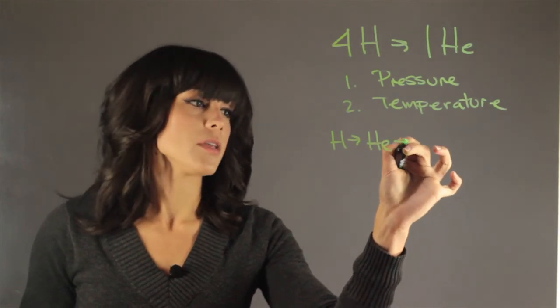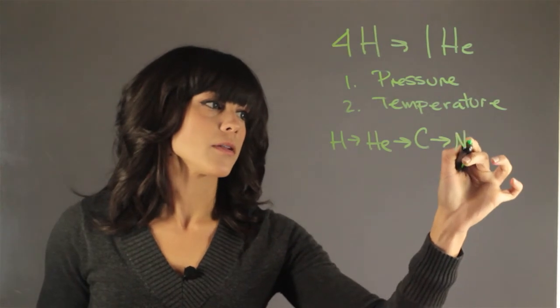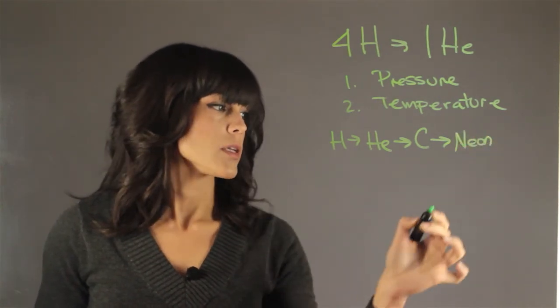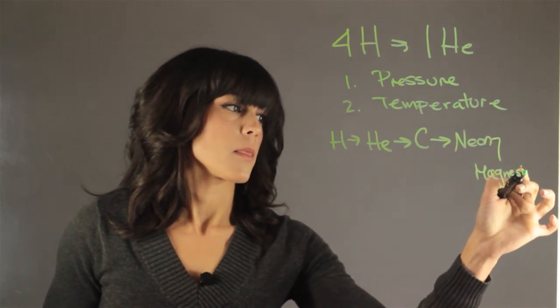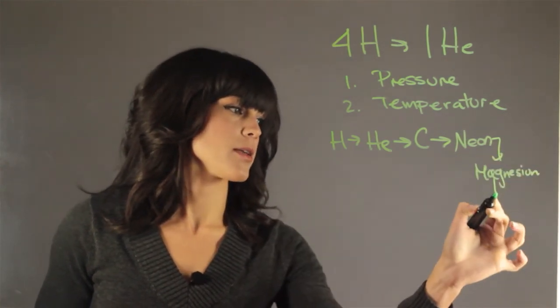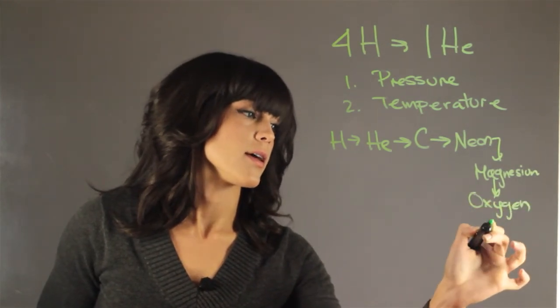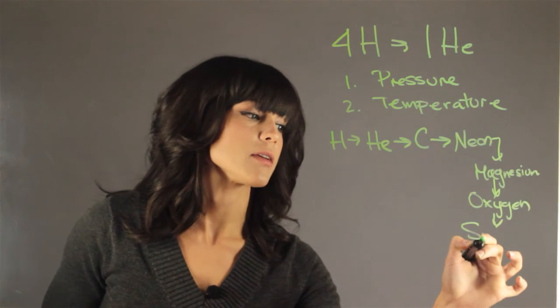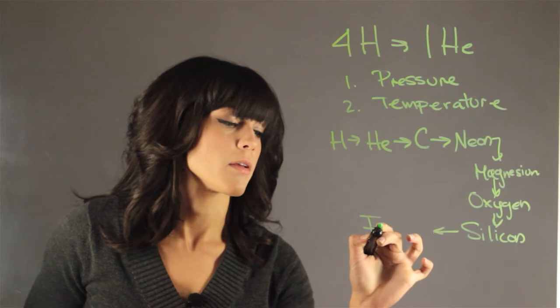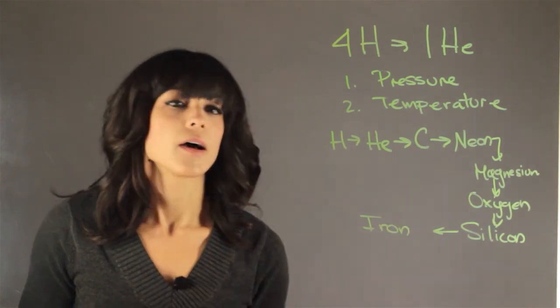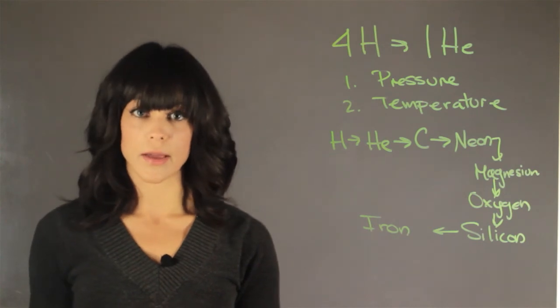We can turn helium into carbon. After that, we have neon. After neon, we have magnesium. Then after magnesium, we have oxygen. After oxygen, we have silicon. After silicon, we have iron. And that's it—we cannot fuse anything heavier than iron.